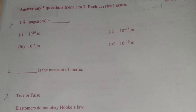Answer any 5 questions from 1 to 7, each carries one score. 1. 1 Angstrom equals: (i) 10^10 m, (ii) 10^-15 m, (iii) 10^15 m, (iv) 10^-10 m.